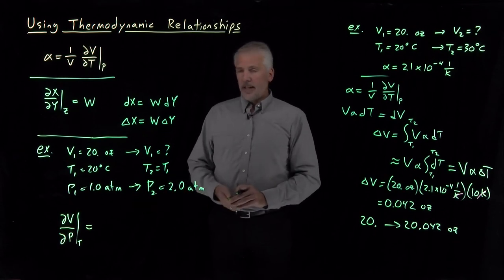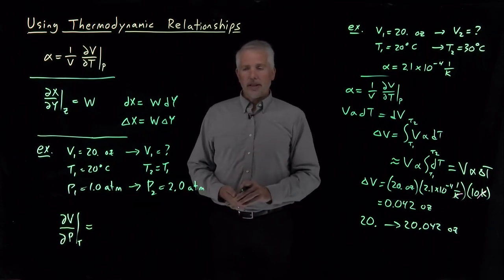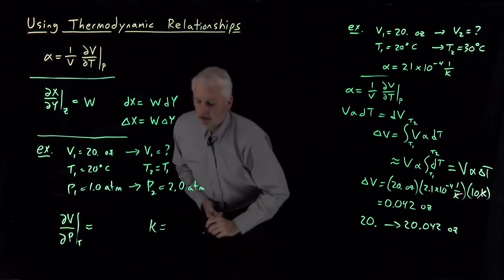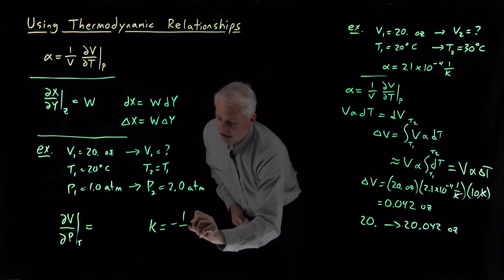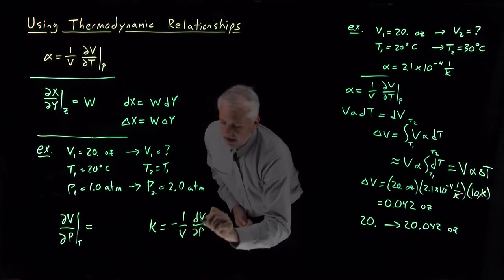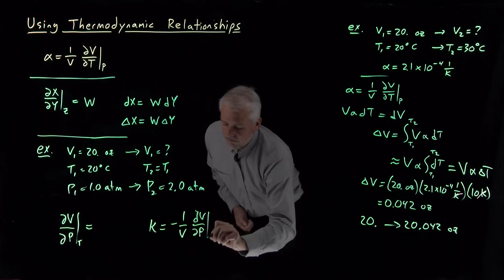And sometimes, as in this case, we can say, okay, that's one I recognize, that's one I've seen before. We've seen the definition of the isothermal compressibility is minus one over V dV dP at constant T.